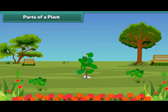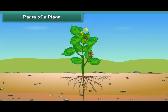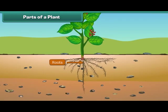Let us discuss the various parts of a plant. The main parts of a plant are roots, stem, leaves, flowers and fruits. Let us know them one by one in more detail. Roots are the lower part of a plant. They grow in soil and help the plants to get water and minerals from the soil.